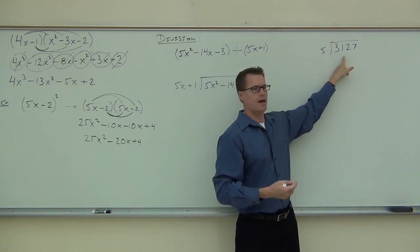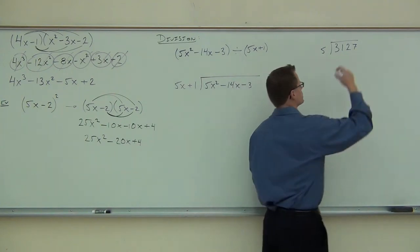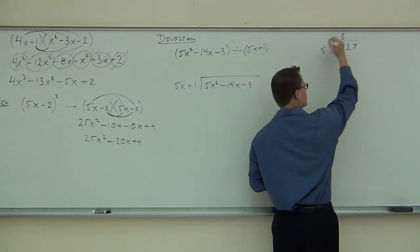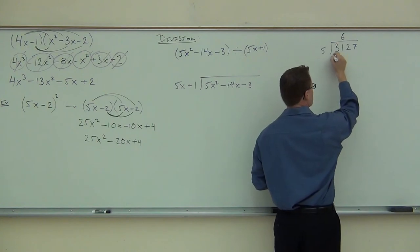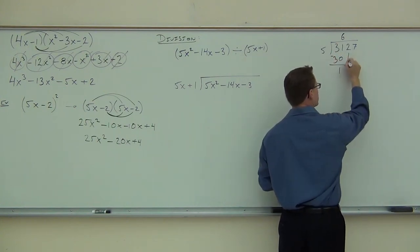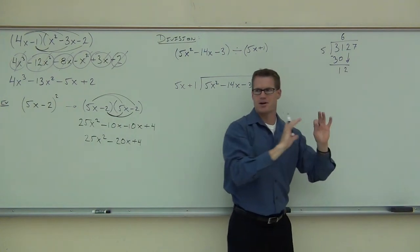We'd go, oh, okay, 5 goes into that 6 times without going over. And so we'd put the 6 up top. We'd multiply. We'd put the 30 right here. And then we'd subtract and get a 1. And then we would bring down a 2.